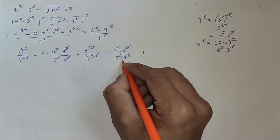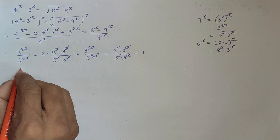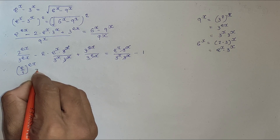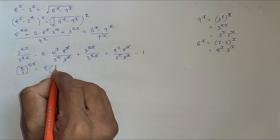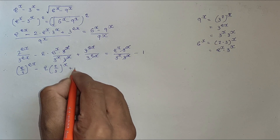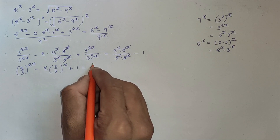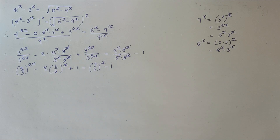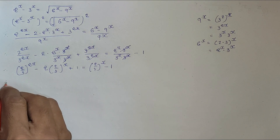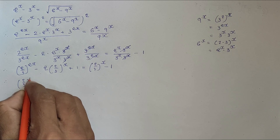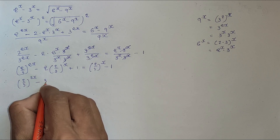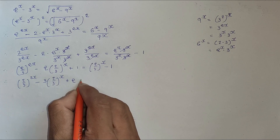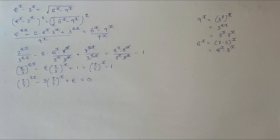After cancellation, we get (2/3) to the 2x minus 2 times (2/3) to the x plus 1 equals (2/3) to the x minus 1. Rearranging: (2/3) to the 2x minus 3 times (2/3) to the x plus 2 equals 0.